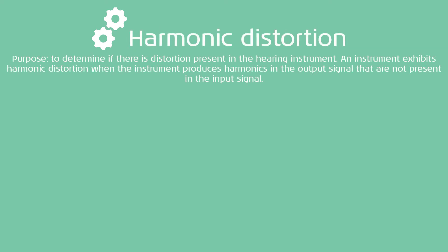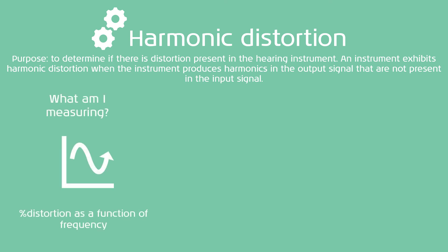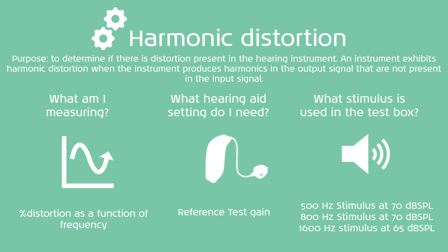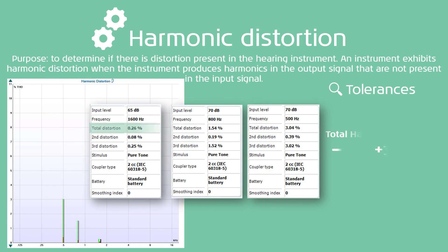The final test in this reduced protocol is the harmonic distortion test, where we find out if there is distortion present in the hearing instrument. An instrument exhibits harmonic distortion when it produces harmonics in the output signal that are not present in the input signal. We measure percentage distortion as a function of frequency, with the hearing aid set to reference test gain. There are three separate measurements: a 500 Hz stimulus at 70 dB, an 800 Hz stimulus at 70 dB, and a 1600 Hz stimulus at 65 dB. For each, you read the total harmonic distortion, which can be no more than 3% of what is stated in the manufacturer's spec sheet.